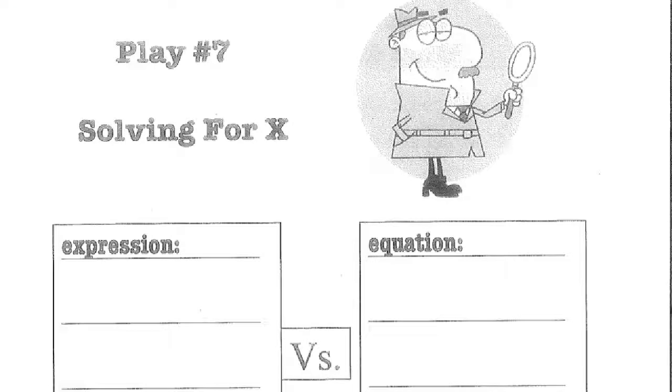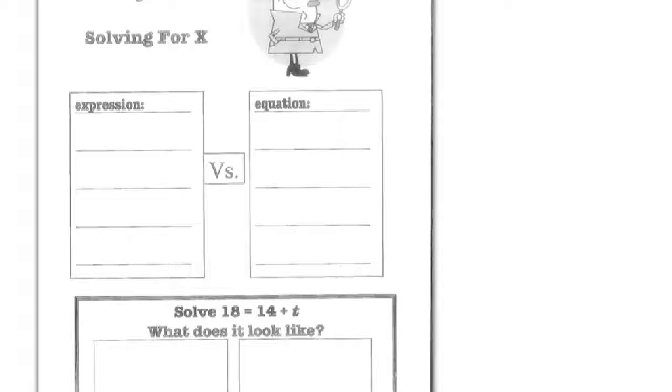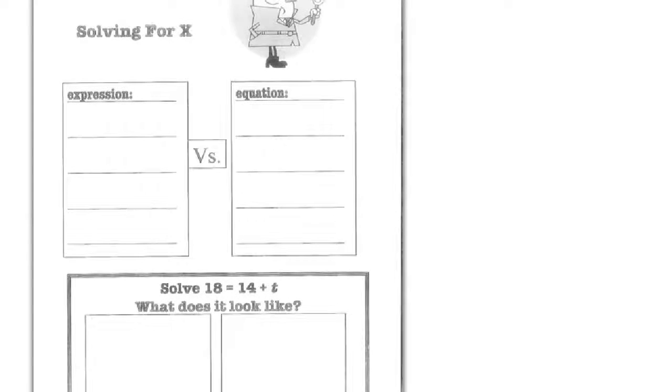The first thing that we're going to talk about is the difference between an expression and an equation. As you can see by the little detective up here, in this step we are going to become like detectives and try to figure out what x is. x is sort of a missing piece or a variable. Sometimes it won't be x, it could be anything. Before we do this, we need to understand the difference between an expression and an equation.